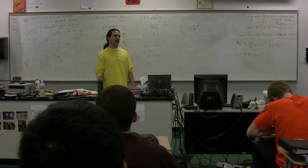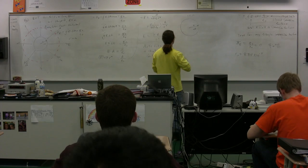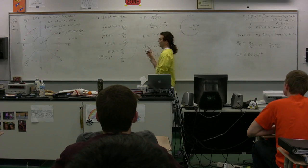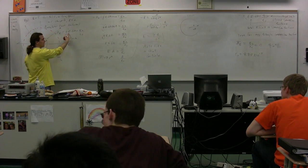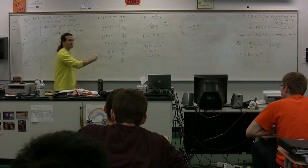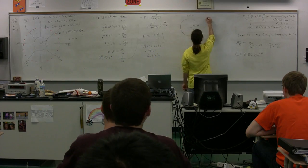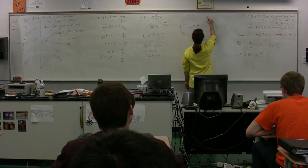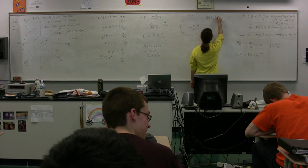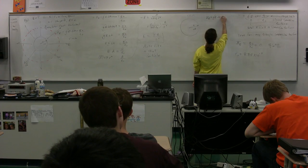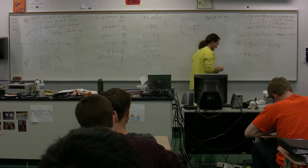We are now going to use Gauss's law. The whole point of Gauss's law is to be able to figure out the electric field. We're going to use Gauss's law again: the net electric flux is equal to the closed surface integral of E dot dA, which is equal to the charge inside the Gaussian surface divided by epsilon naught.